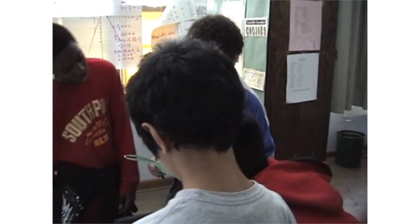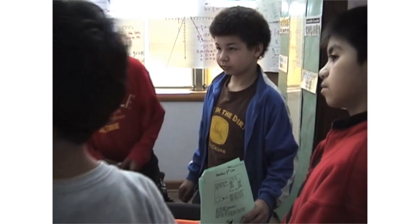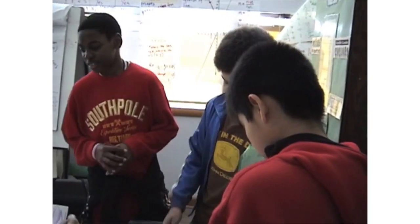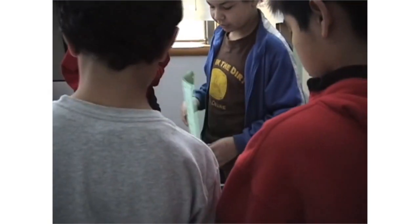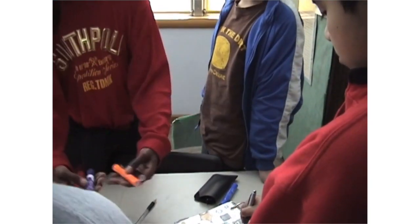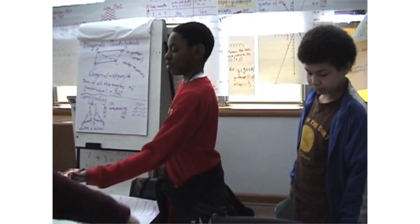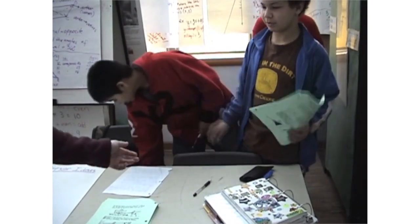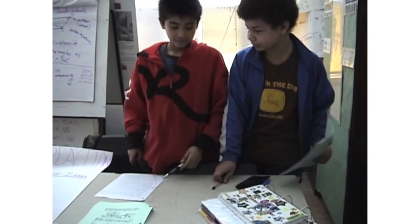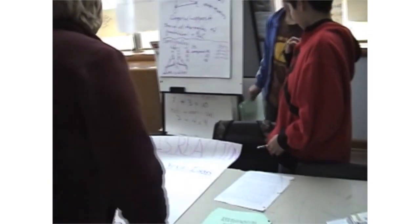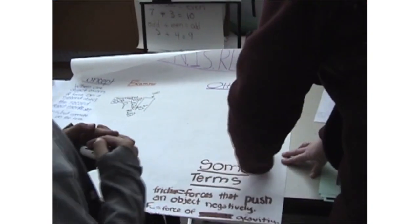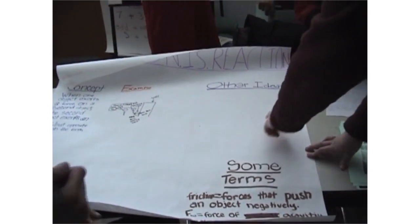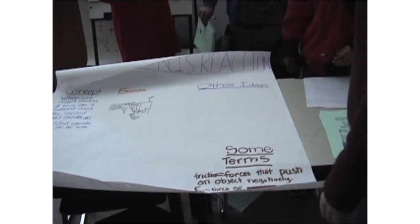Jaden says the two force pairs have to be equal for an object to stay stationary. The teacher confirms: can you give an example? If I set a pen on the table, it's pushing down with gravity — however much it weighs — and the table is pushing up with the same force. The rule is that for it to stay still, they have to be equal. What if the table pushed twice as hard? The teacher encourages both Samson and Jaden to put their ideas on the poster.